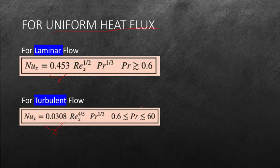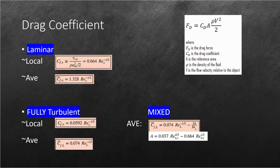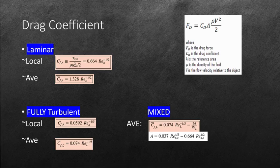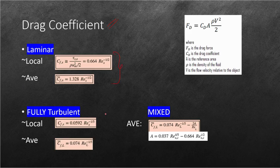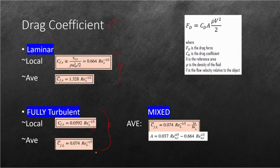So a bonus sub-topic since we are already talking about an empirical method of solving, the drag coefficient can also be solved using an empirical method. Here we have the formulas for the local and average drag coefficient for laminar and here is for the turbulent. We have also our local and average.